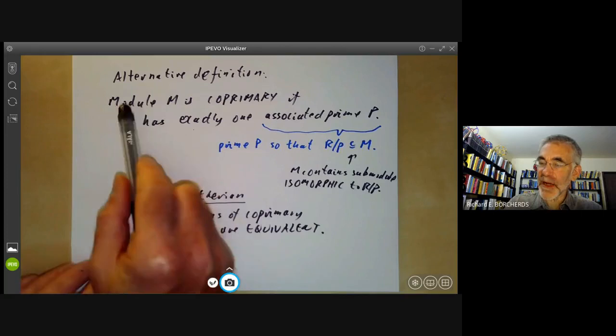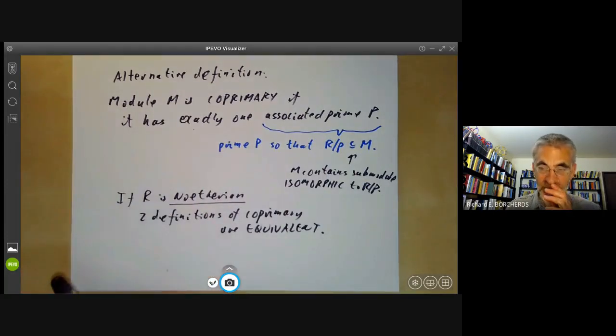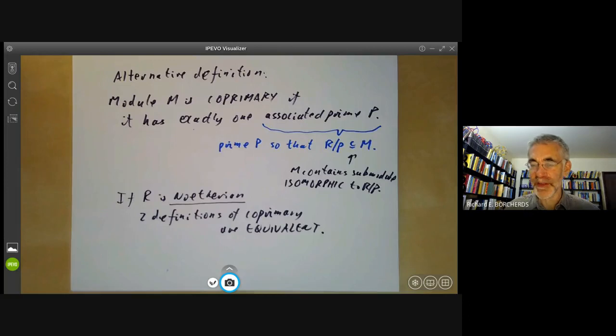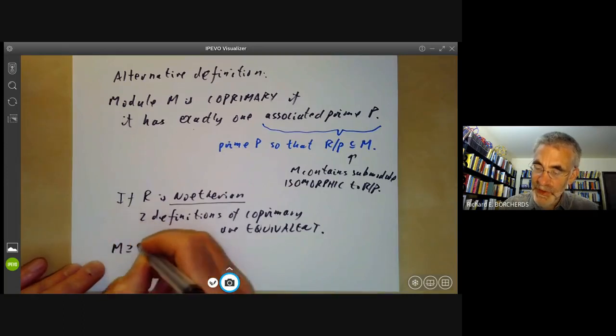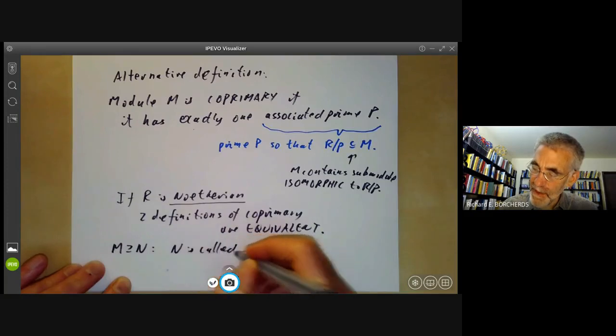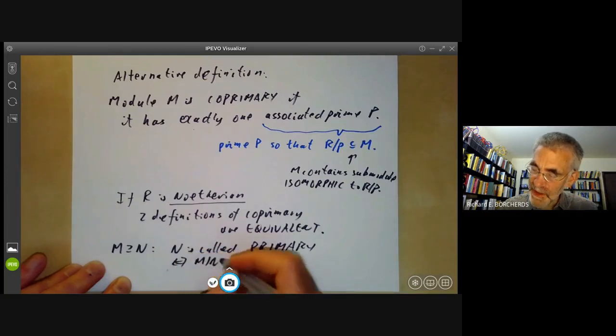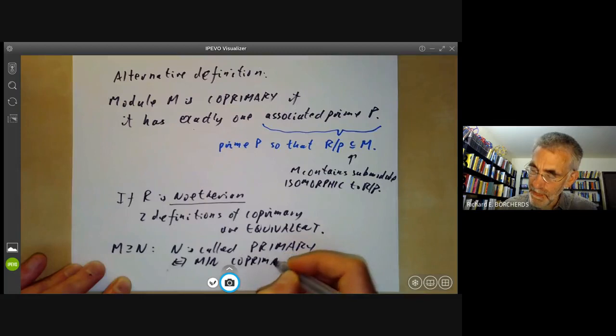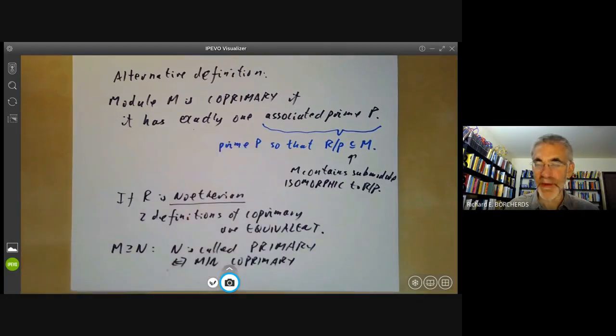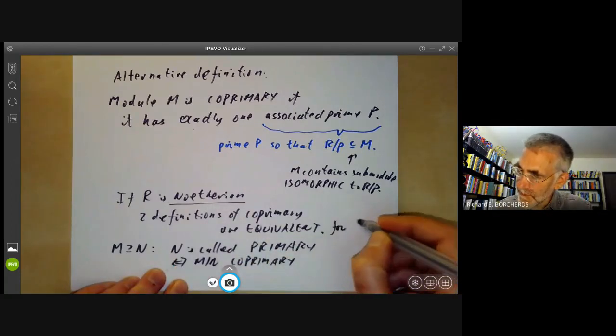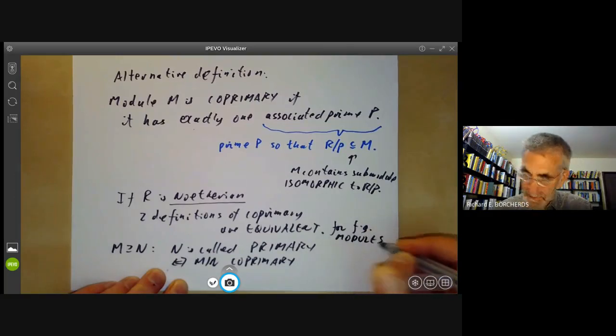So this alternative definition turns out usually easier to use in practice. It's also a bit more natural because it only talks about one module M, whereas the definition of primary ideals talks about two separate ideals. In general, we say that if M contains a submodule N, then N is called primary. And again, there are two different definitions of that depending on which definition of co-primary you use, but they're equivalent for finitely generated modules over Noetherian rings. I should say these are equivalent for finitely generated modules, not for arbitrary modules.